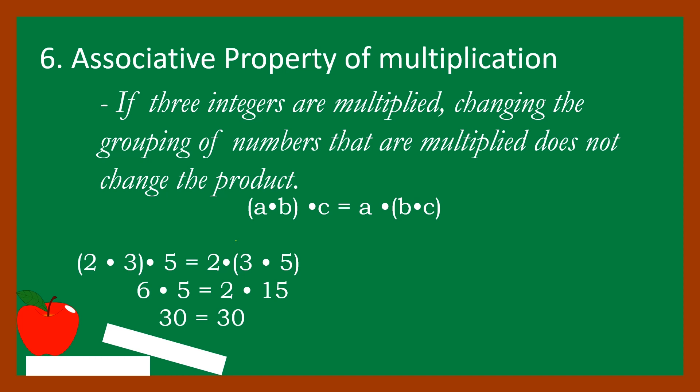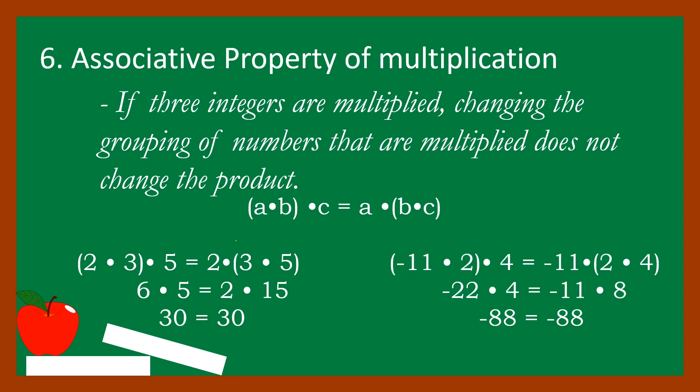Next example: the product of (negative eleven times two) times four is equal to negative eleven times the product of (two times four). Simplifying: negative eleven times two equals negative twenty-two, and negative twenty-two times four equals negative eighty-eight. On the other side, two times four equals eight, and eight times negative eleven equals negative eighty-eight.